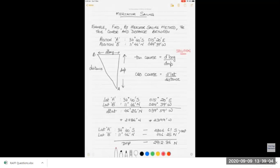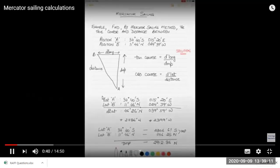We are going to draw that triangle. We are going from southeast to northwest with position A and B. This will be our difference in meridional parts and this will be the d long. This is the distance, this is the course. We know the formula: tan course equals d long upon dmp, and cos course equals d lat upon distance.